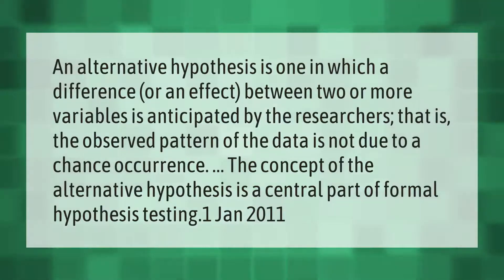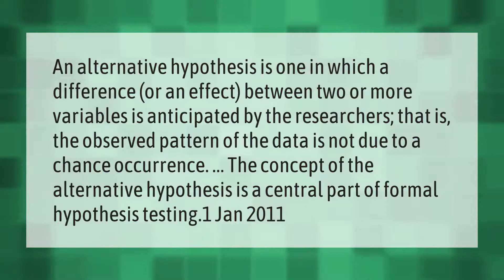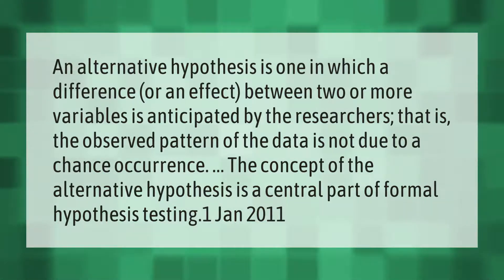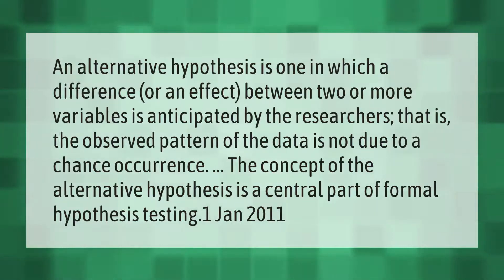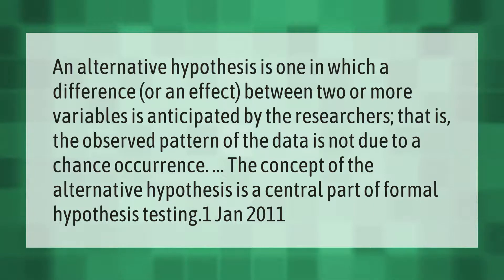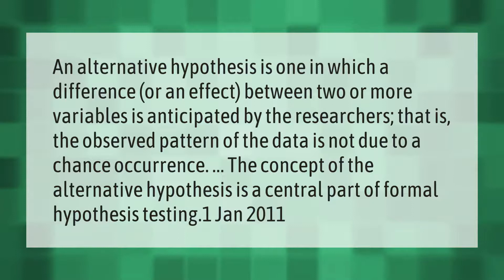An alternative hypothesis is one in which a difference or an effect between two or more variables is anticipated by the researchers — that is, the observed pattern of the data is not due to a chance occurrence. The concept of the alternative hypothesis is a central part of formal hypothesis testing.